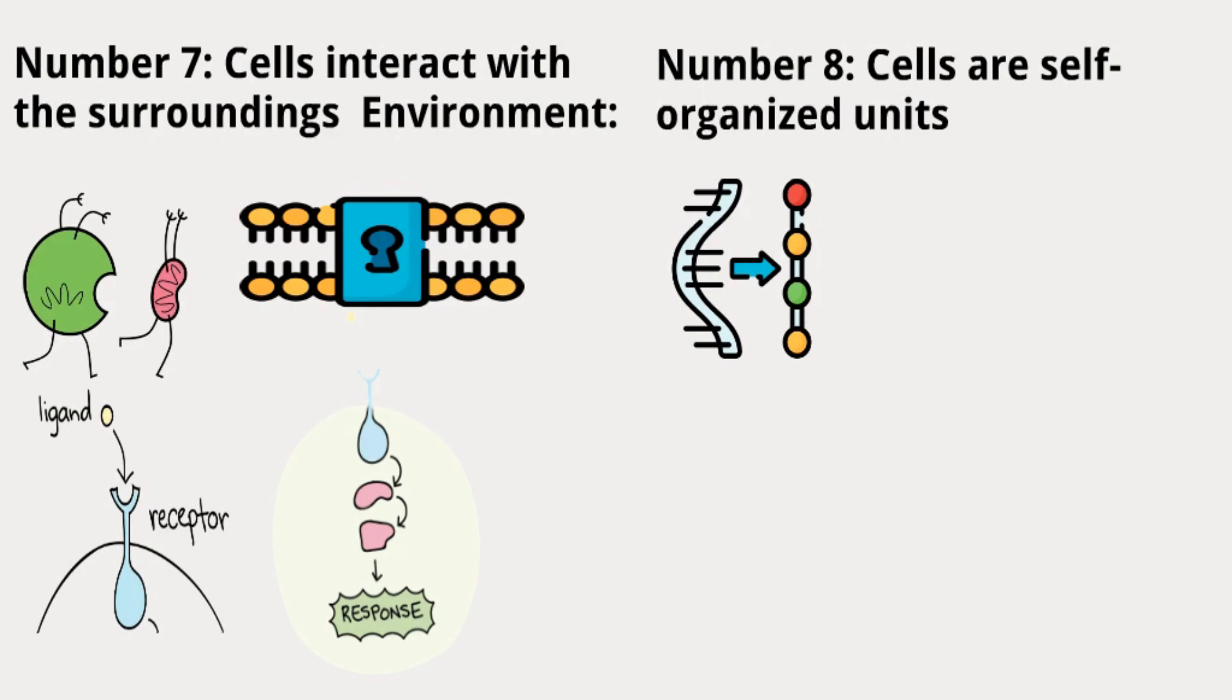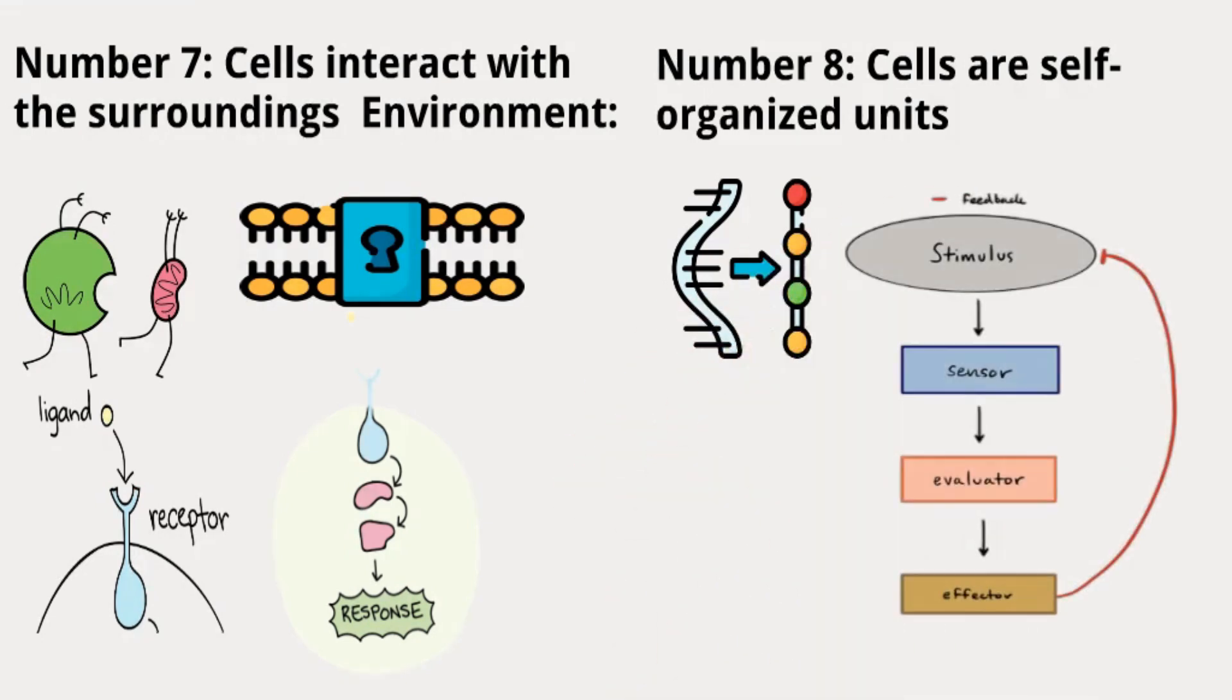Cells are like resilient machines that can protect themselves from harmful changes. They have feedback systems to correct any issues and keep everything in the right order. This is crucial because mistakes can lead to problems like mutations or cancer. Scientists are still trying to understand how cells control their activities.